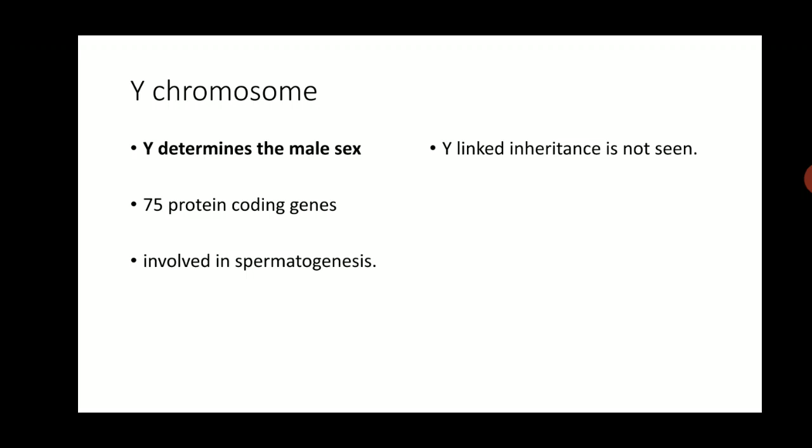The Y chromosome is only present in males. It is a very small chromosome with only about 75 genes, most of which are involved in spermatogenesis. A loss of the Y chromosome leads to absence of spermatogenesis and hence infertility. Patients with loss of the Y chromosome cannot transmit any Y-related disease to their offspring, and hence Y-linked inheritance is not seen.